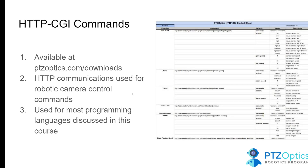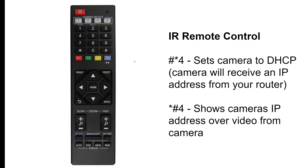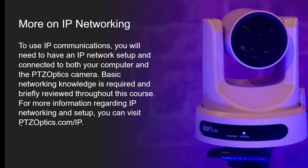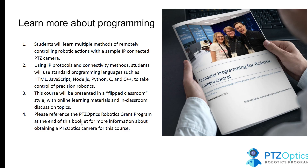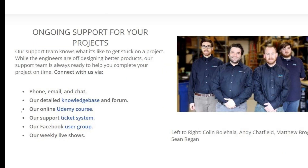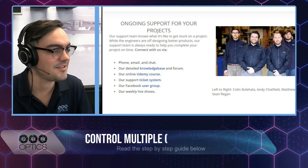Don't forget to subscribe to our YouTube channel. It's also worth mentioning there are a ton of HTTP CGI commands available to do other things. If you'd like to set your camera with a DHCP address — meaning automatically receive an IP address from your router — you can press pound-star-4 and the camera will reboot and accept an IP address. If you don't know your camera's IP address, press star-pound-4 to display the camera's IP address on the video feed. You can learn more about IP networking at ptzoptics.com/ip and about computer programming for PTZ Optics cameras at ptzoptics.com/robotics. We've got a great support team here to help you. Thanks for watching!